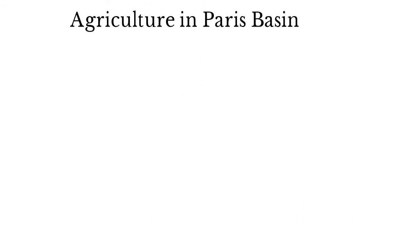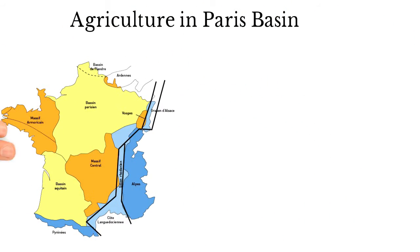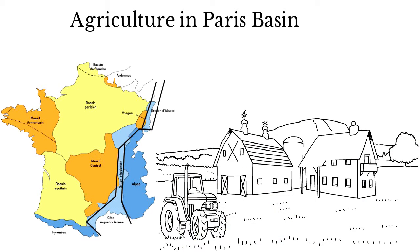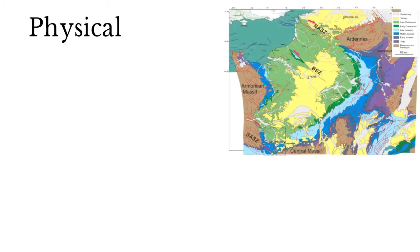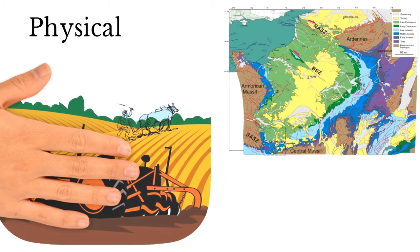Agriculture in Paris Basin. The Paris Basin is one of the most productive agricultural regions in the world. It is the most important core region in France. The topography of the Paris Basin is generally flat. This mechanization makes the land productive and makes them good profits.